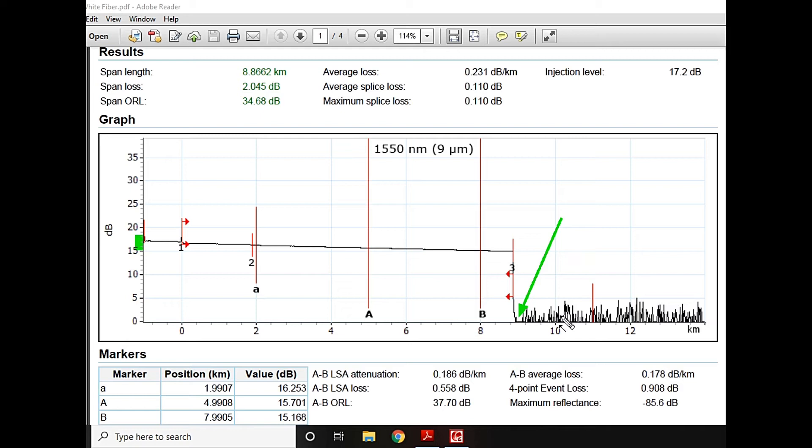This portion is all the noise. When your graph actually drops, that is the end point of your fiber. When there is a sudden drop, that is the end point of your fiber. So I hope that this X axis and Y axis are clear.